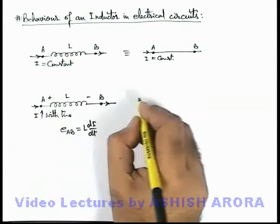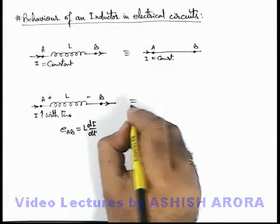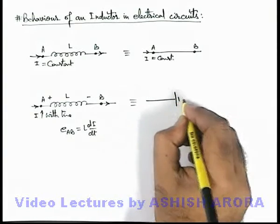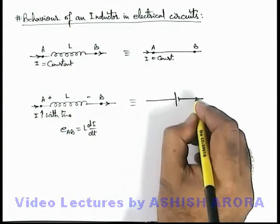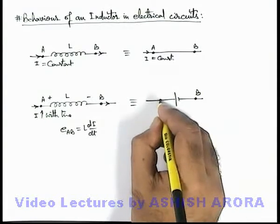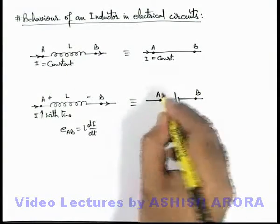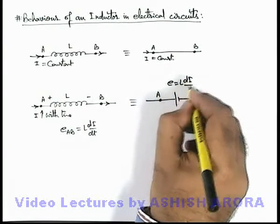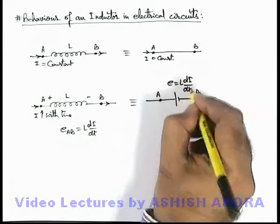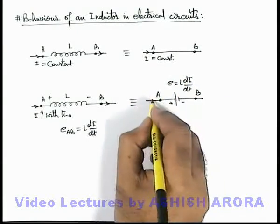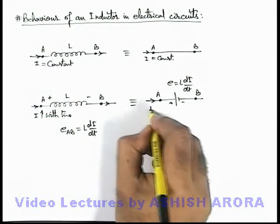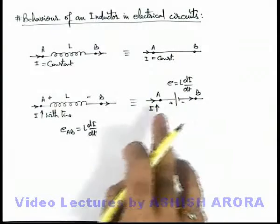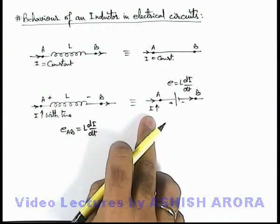So we can say such a situation will act like a battery induced across terminals A and B, having an EMF of L·di/dt. Its polarity is such that if current is increasing with time, the polarity will oppose the increase in current.